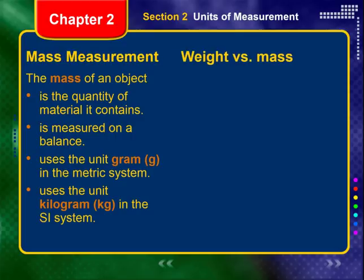The mass of an object is the quantity of material it contains — not how much it weighs, not how big it is, but how much stuff is there. It's measured using a balance, which compares two masses. Mass uses the unit gram in the metric system and kilogram in the SI system.